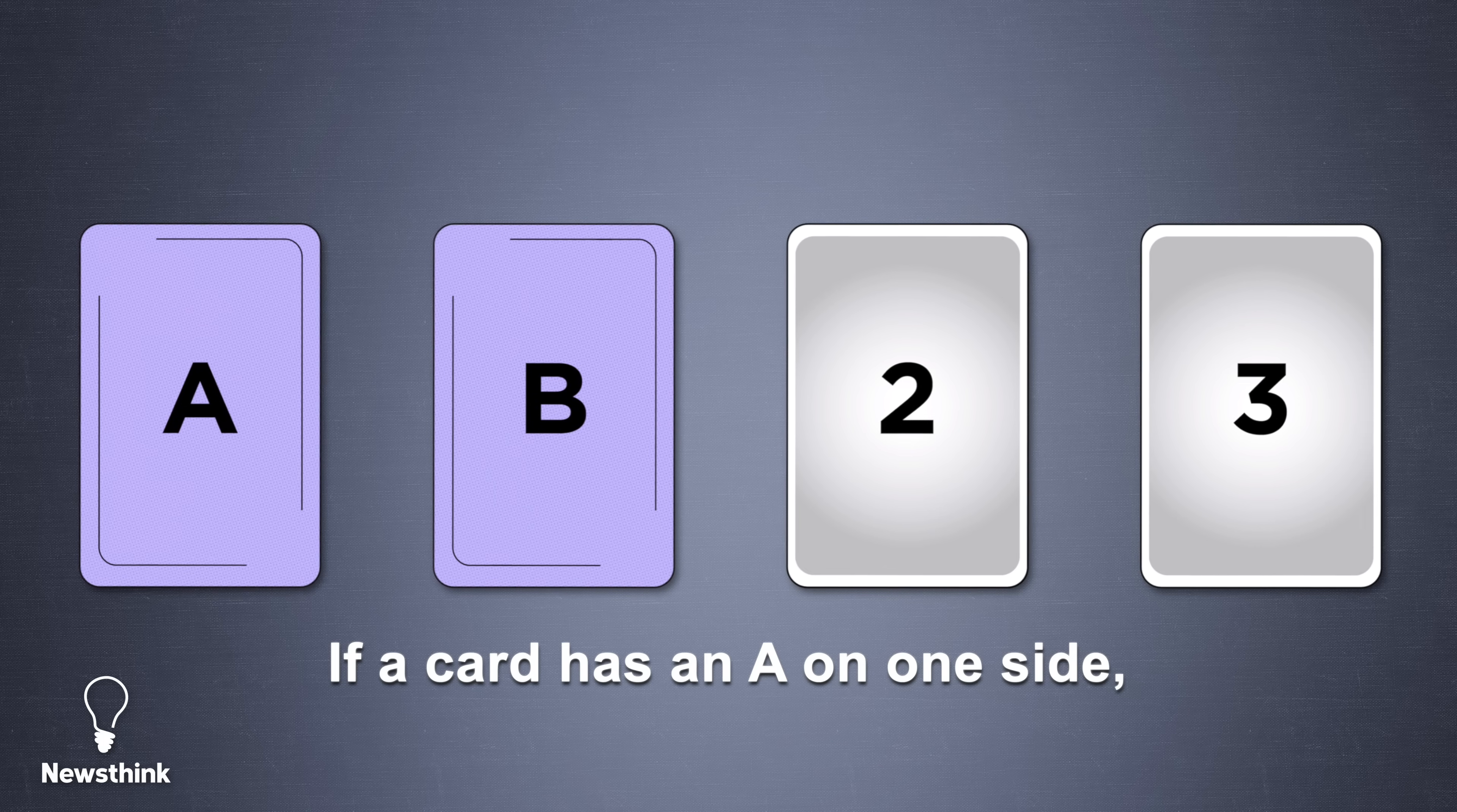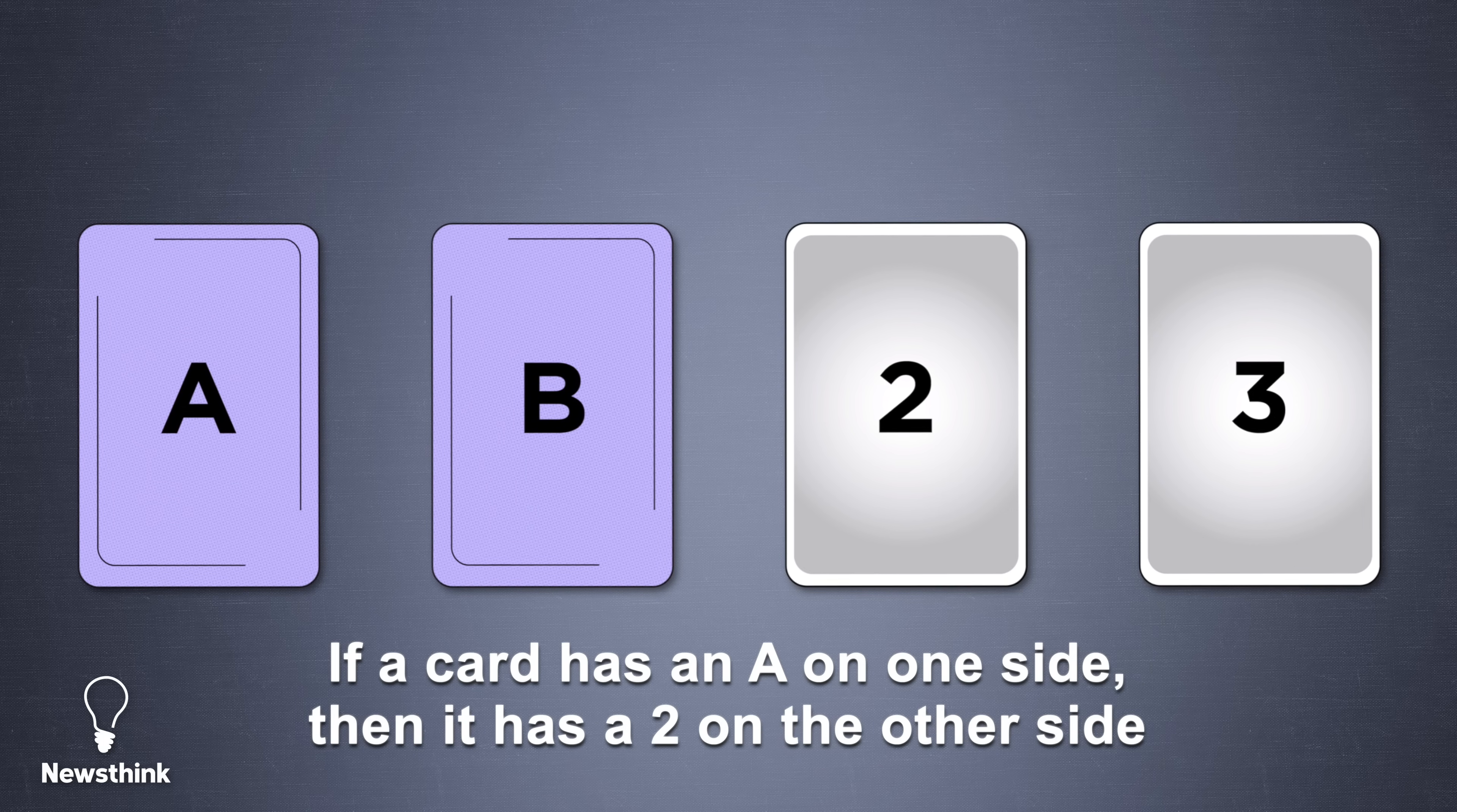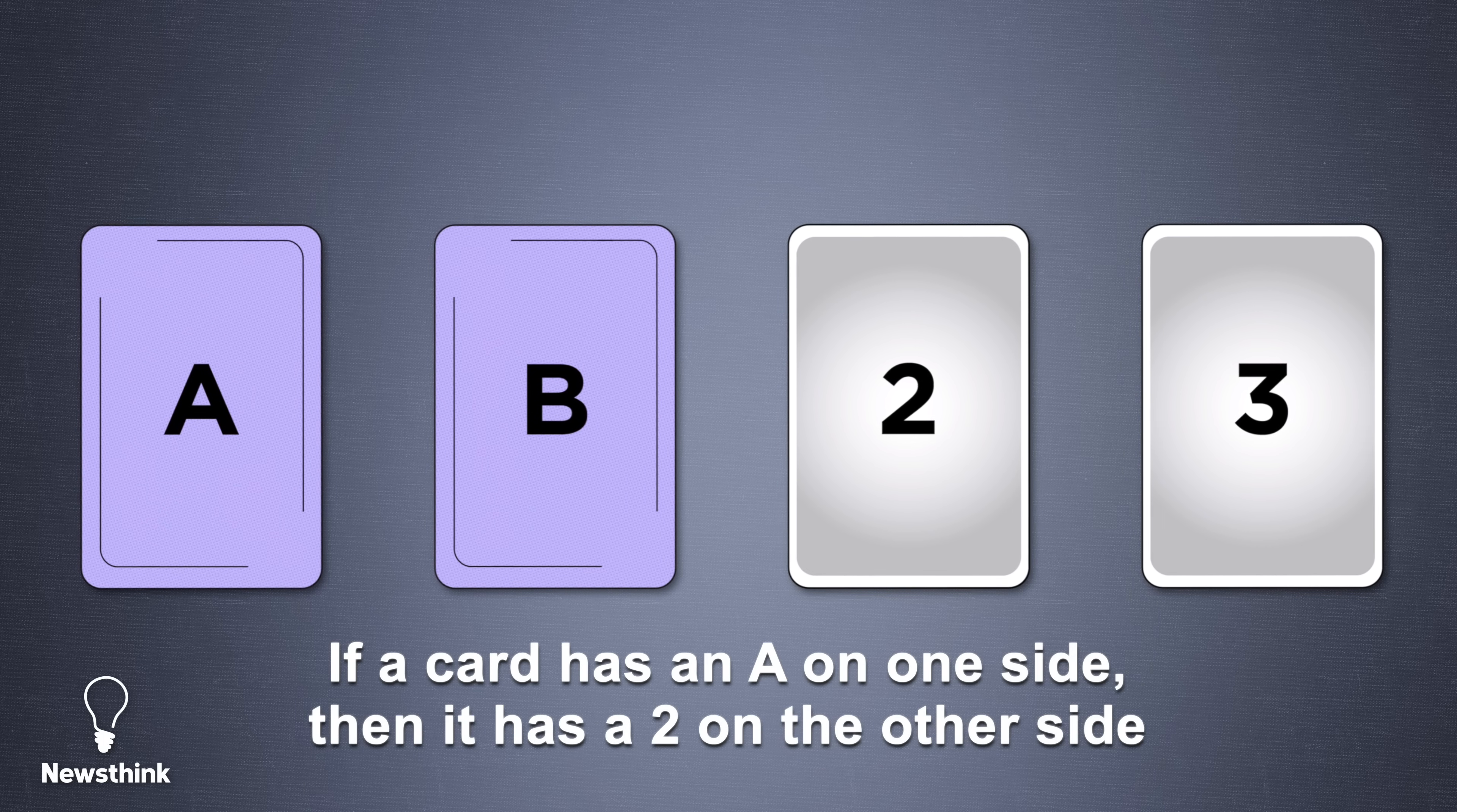If a card has an A on one side, then it has a 2 on the other side. Which cards should you turn over to test the rule?